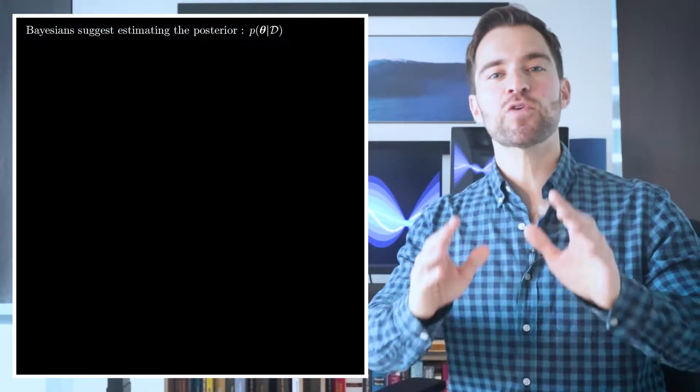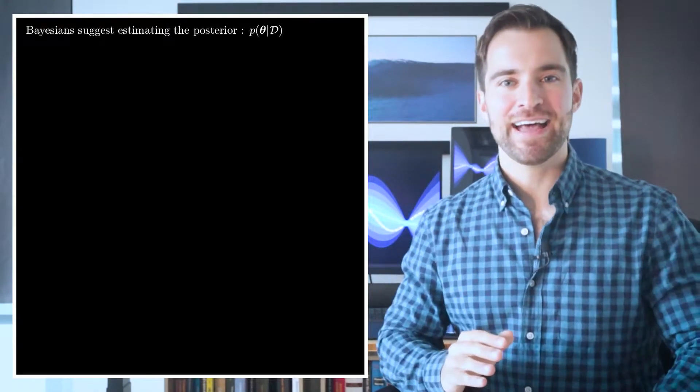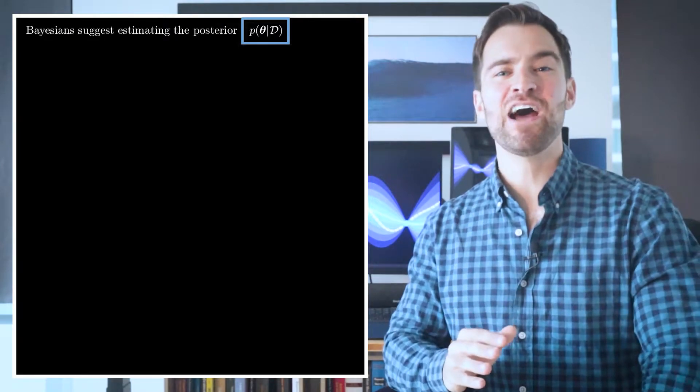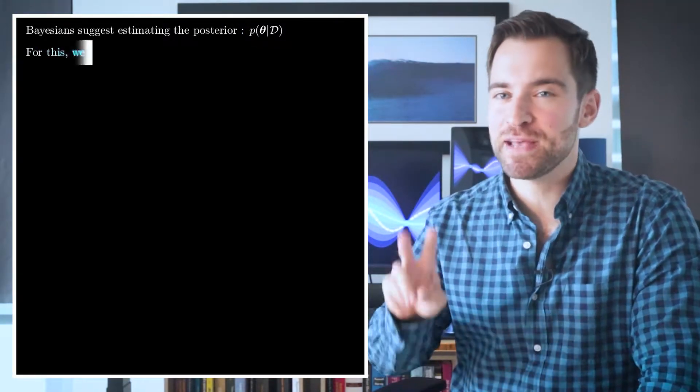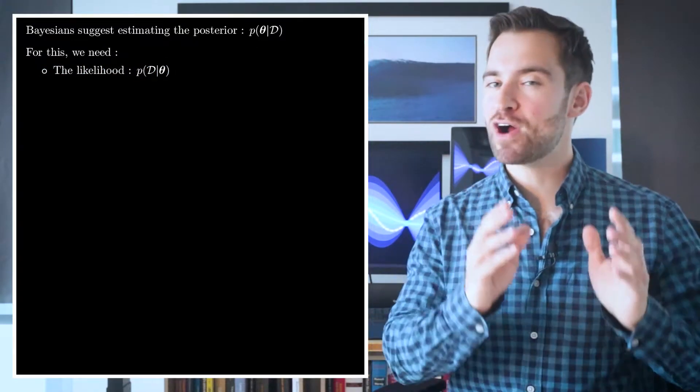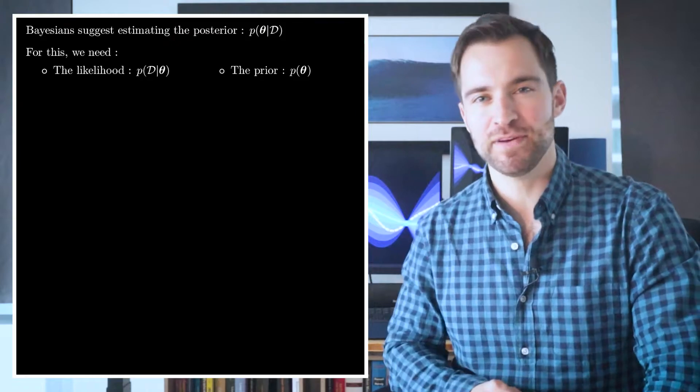But to a Bayesian, there is a more complete question to ask. Instead of looking for the most likely θ, you should ask for a whole distribution over θ. That is, you are interested in this function. With it, you can figure out how likely any given thetas are. But for this great prize, the Bayesians demand two things. The likelihood function, which we've been handling, and a prior distribution over θ, which is a bit extra.